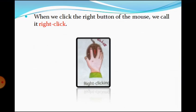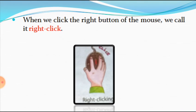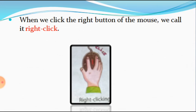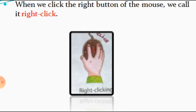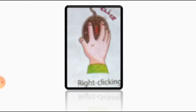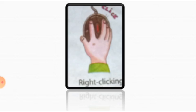Next, जो word है वो है right click. अब right click किसे कहते हैं? When we click the right button of the mouse. जब हम mouse के right button को अपने middle finger की मदद से click करते हैं, तो इसे हम right click बोलते हैं. जिस तरह से इस picture में आपको दिखाई दे रहा है — mouse के right button को middle finger की मदद से click किया गया है. तो इसको बोलते हैं right clicking.